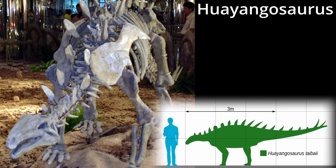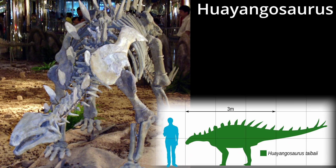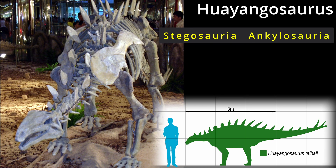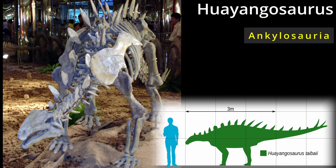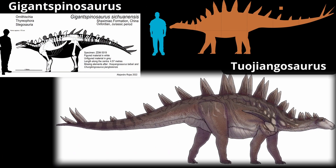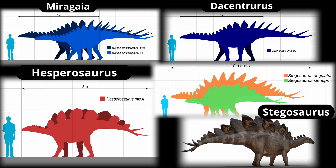In the middle Jurassic, we start seeing members of two important Tyriophoran subgroups: Stegosauria and Inculosauria. The earliest definitive Stegosaurian is Huayyengosaurus. Later in the Jurassic, Stegosaurians got bigger, with examples from around the turn of the middle Jurassic such as Tuoyengosaurus and Gigant Spinosaurus. The late Jurassic saw further radiations with Miragaya, the Centurus, Hesperosaurus, and the famous Stegosaurus.